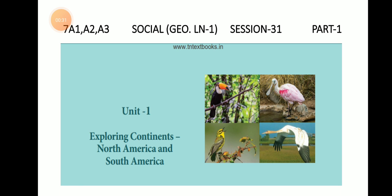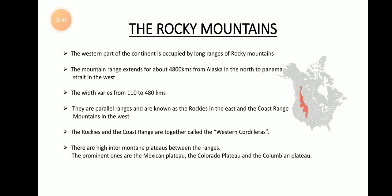Today we continue with the next portion: the physiographical system of North America. Physiography means the land division of a country or continent — how the land system is formed and what it looks like. The North American continent is divided into four types of land systems: the Rocky Mountains, the Great Plains, the Appalachian Highlands, and the Coastal Plains.